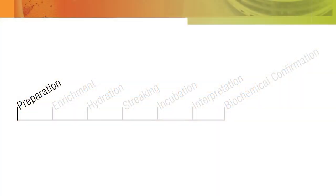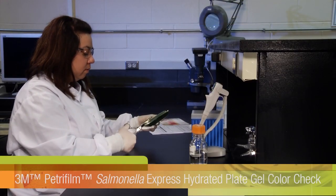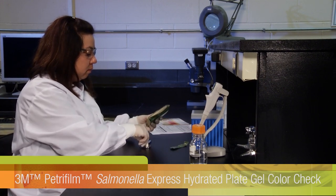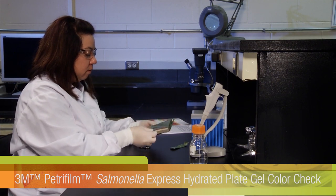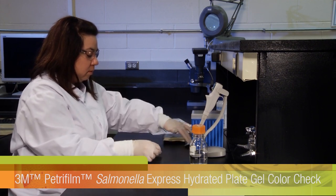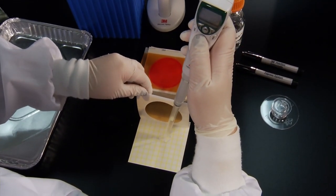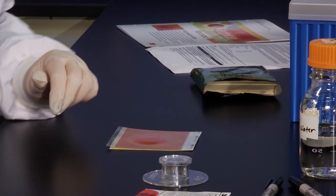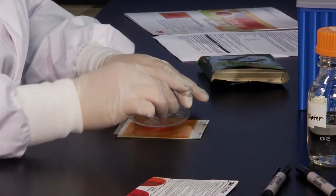Before using your 3M PetriFilm Salmonella Express plates for testing, check the color of the hydrated plates gel to ensure that the plates have not been exposed to extreme high temperatures. Remove one plate from the pouch and dispense 2ml of sterile distilled water, reverse osmosis water or Butterfield's phosphate diluent onto the plate.